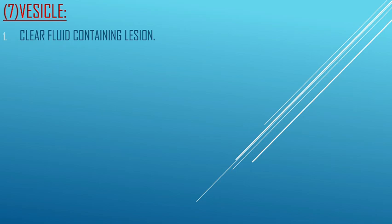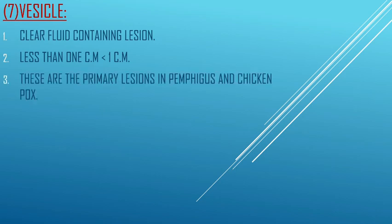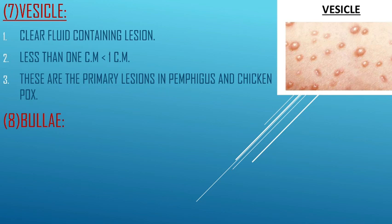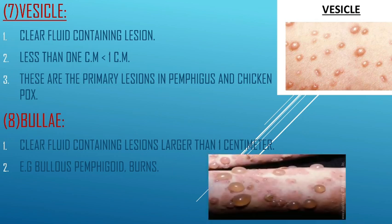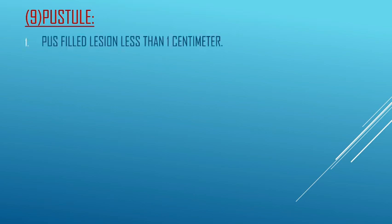Next is the vesicle — a clear fluid-containing lesion less than 1 centimeter. These are the primary lesions in pemphigus and chickenpox. Next is the bulla — also a clear fluid-containing lesion but larger than 1 centimeter. Examples include bullous pemphigoid and burns. So vesicle and bulla share the same characteristics, differing only in size: vesicle is less than 1 centimeter and bulla is larger than 1 centimeter.